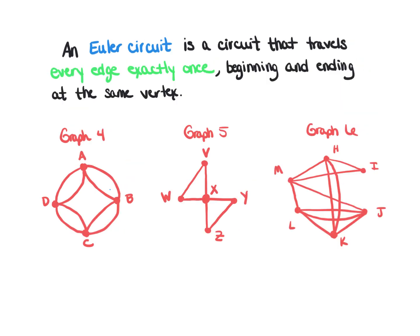An Euler circuit is similar in that you travel every edge exactly once, but a circuit means you begin and end at the same vertex. So it's the same idea as an Euler path, but we must start and finish at the same spot.